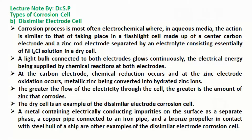A metal containing electrically conducting impurities on the surface as a separate phase, a copper pipe connected to an iron pipe, and a bronze propeller in contact with the steel hull of a ship are other examples of the dissimilar electrode corrosion cell.